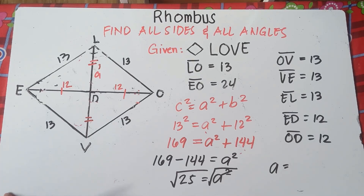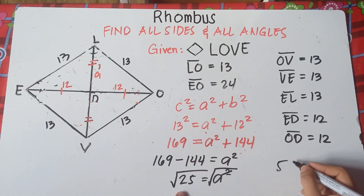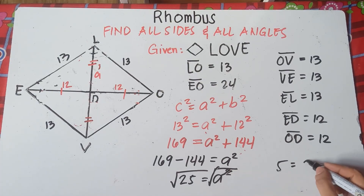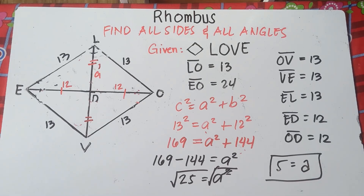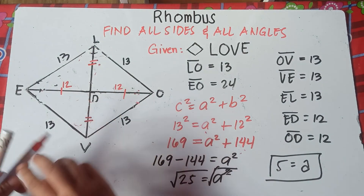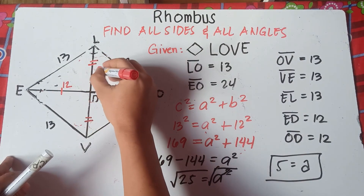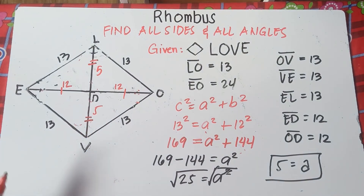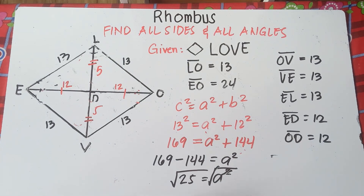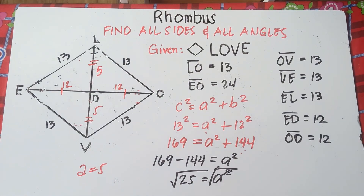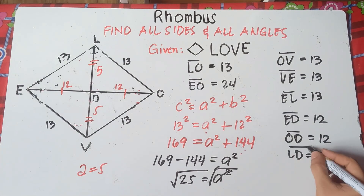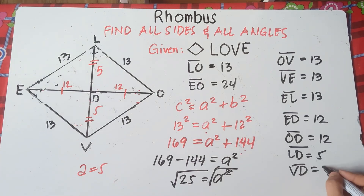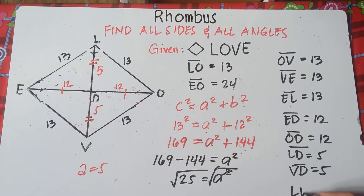We extract the square root of both sides. So A equals the square root of 25, which is 5. Therefore, line LD is equals to 5. If LD is 5, then DV must also be 5. So LD = 5 and VD = 5. Therefore, diagonal LV is equals to 10.